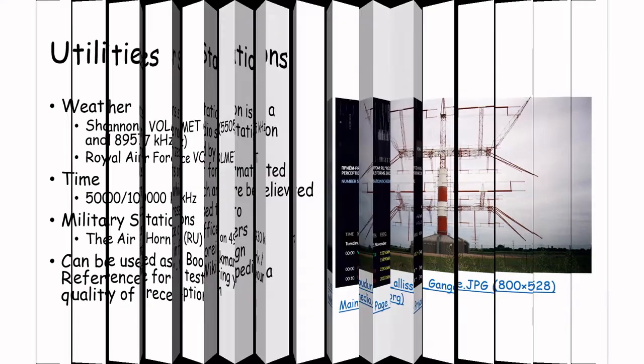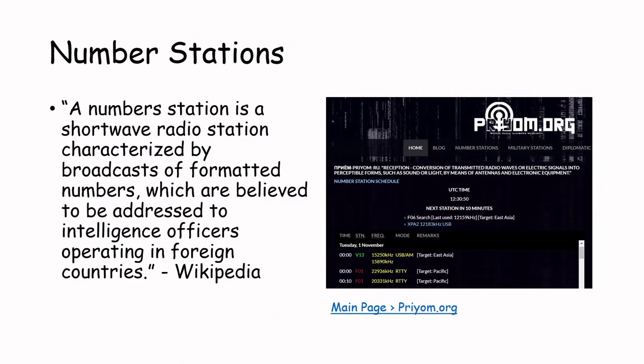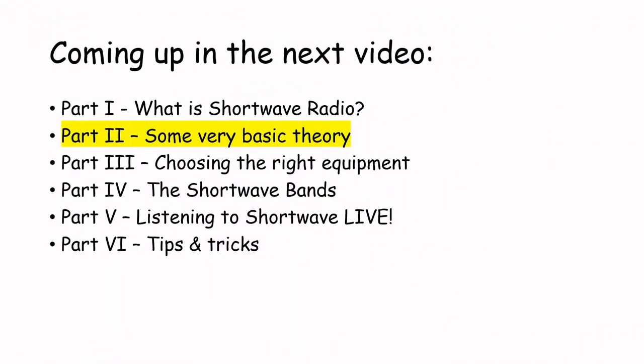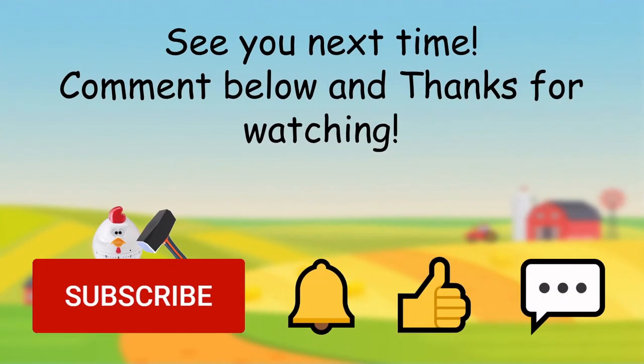Last but not least, you can also listen to number stations. However, they are not easy to find — number stations exist, and you can receive them using the schedule on priyom.org. These stations are believed to be addressed to intelligence officers operating in foreign countries. Next time I will cover some very basic theory about shortwave radio listening. See you next time, comment below and thanks for watching.